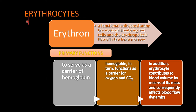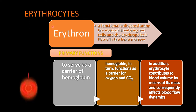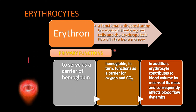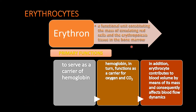Let's go through the specifics of erythrocytes. First, the erythrone is the functional unit constituting the mass of circulating red cells and the erythropoietic tissue in the bone marrow — essentially the entirety of all circulating cells and the erythropoietic potential of bone marrow cells. The erythrogram is the collection of parameters tested to check the functionality of the erythrone, and could include your RBC count, hemoglobin concentration, and others.